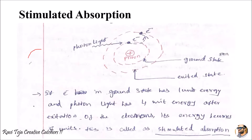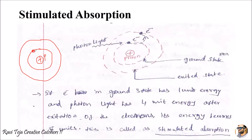Consider this as a kind of atom surrounded by two energy states with a proton in between. The lower level is the ground state where electrons are currently staying, and the second layer is called the excited state or higher energy level state. The electrons on the ground state energy band have only one unit of energy.